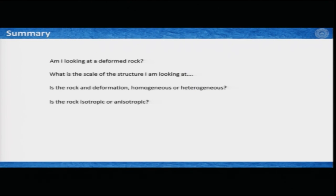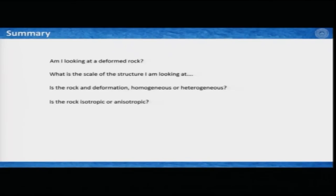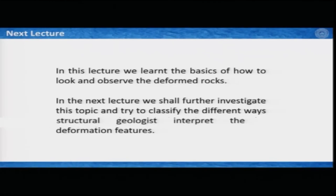We are almost at the conclusion of this lecture. What we learned is very important: when you go to the field or see a photograph of a deformed rock sample, the first question you should ask as a structural geologist is: am I looking at a deformed rock? And if yes, what is the scale of the structure I am looking at? Are the rock deformation features homogeneous or heterogeneous? Is this rock isotropic or anisotropic? With this note, I conclude this lecture. In the next lecture, we will mostly learn what are the different ways structural geologists approach looking at deformed rocks. Thank you very much, and stay tuned.